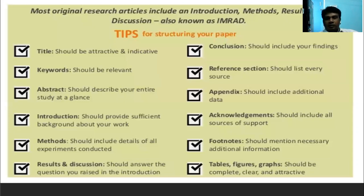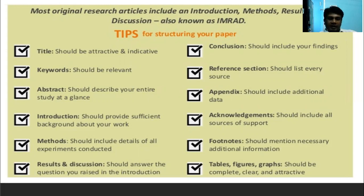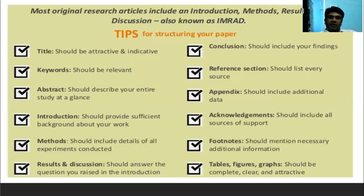In summary: the title should be attractive and indicative; keywords should be relevant; the abstract should describe your entire study; the introduction should provide sufficient background; the methods should include details of all experiments; the results and discussion should answer the questions raised in the introduction; the conclusion should include your findings; the reference section should list every source; the appendix should include additional data; acknowledgements should include all sources of support; footnotes should mention necessary additional information; and tables, figures, and graphs should completely present your research data.